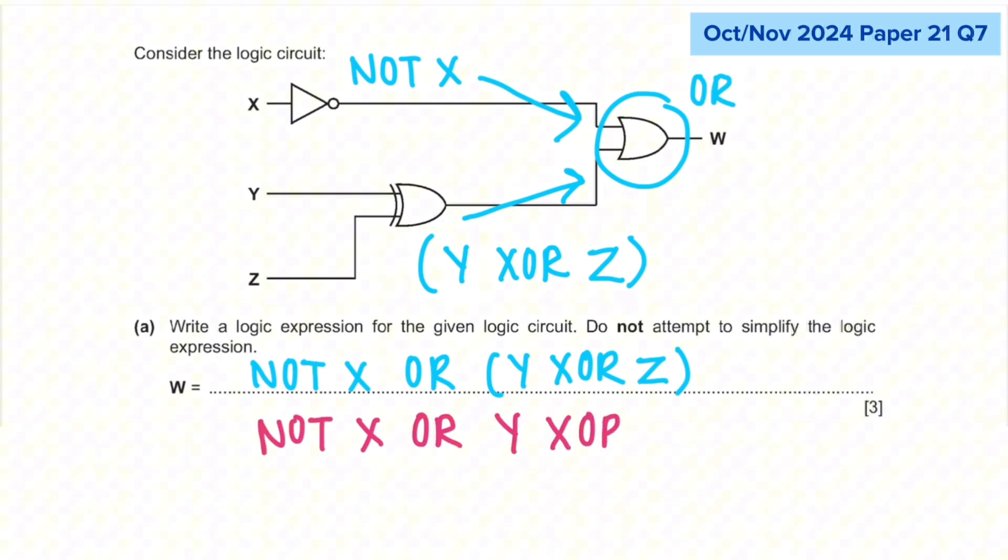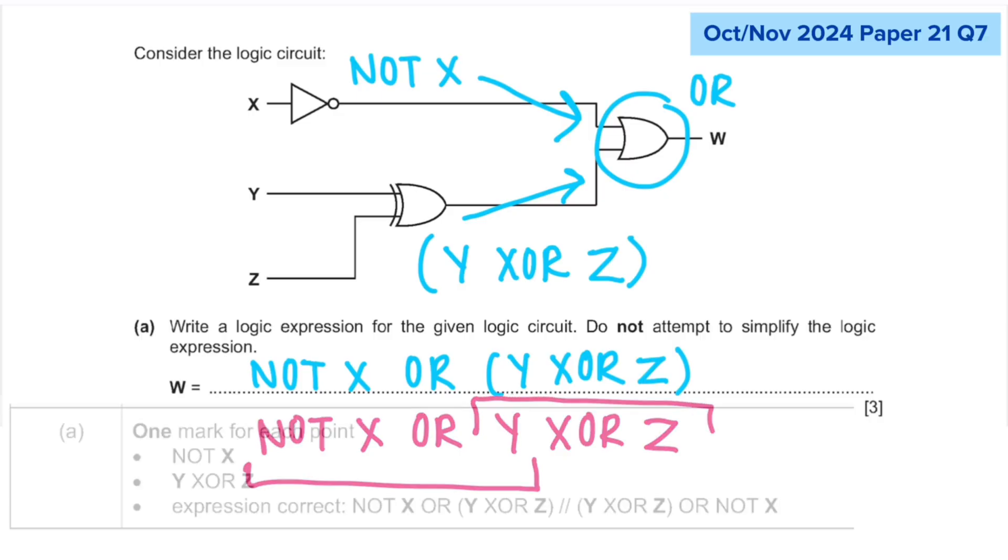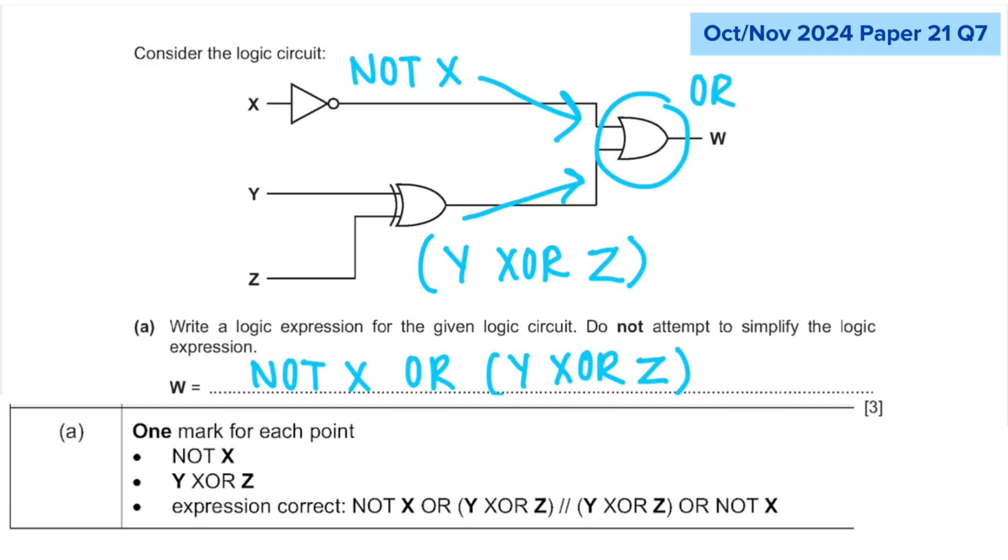If you don't, then it will look like this, which could cause some confusion on which operation that you do first. Do you do the NOT X OR Y first? Or do you do the Y XOR Z first? So make sure you put the brackets in the right place. And as you can see, we got the answer correct from the mark scheme.